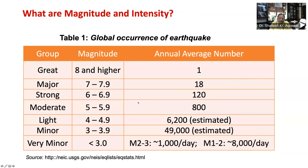These magnitude scales have no upper or lower limit — the Richter magnitude can be as high as 10 or more, and as low as 0 or even negative. The magnitude scale is logarithmic, and therefore an increase in magnitude by 1.0 implies 10 times higher waveform amplitude and about 31 times higher energy release. For example, the energy released in a magnitude 7.7 earthquake is about 31 times that released in a magnitude 6.7 earthquake, and about 1000 times that released in a magnitude 5.7 earthquake — so a difference of 2 in magnitude enhances energy release by 1000 times.